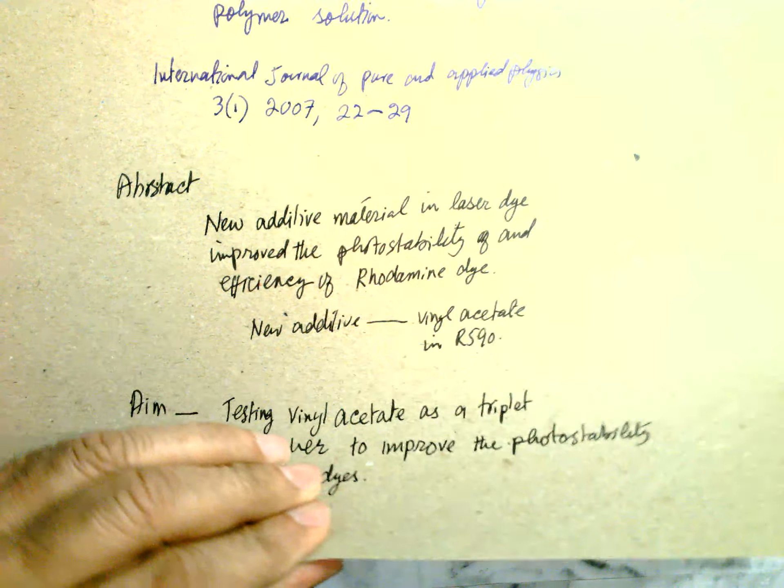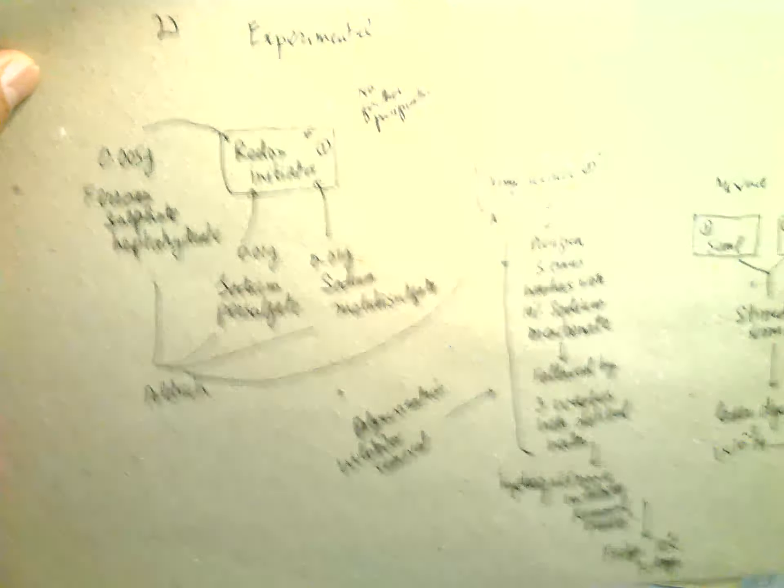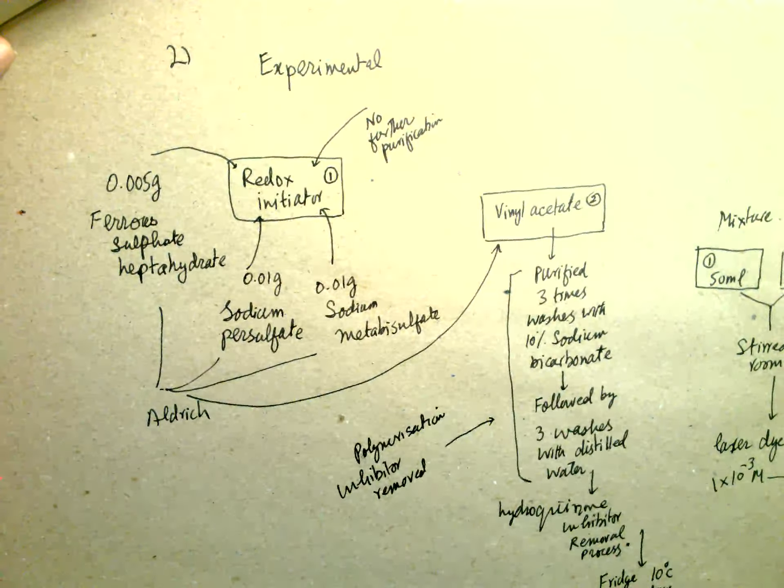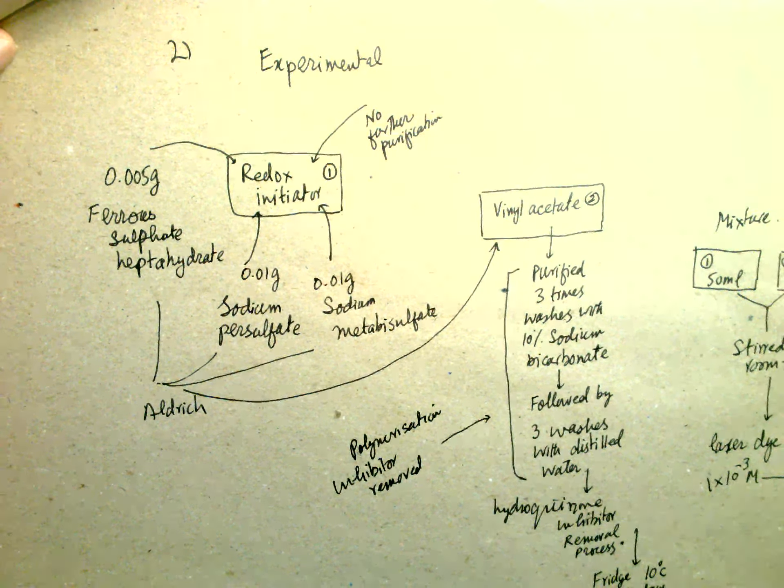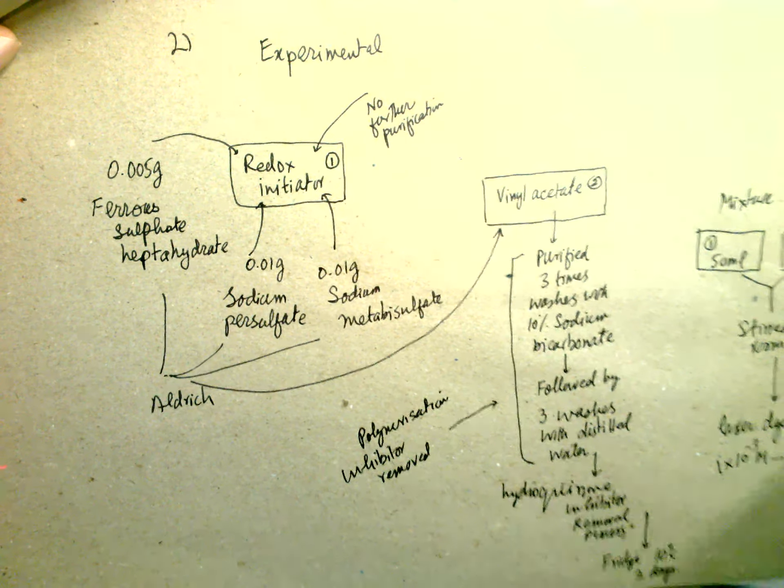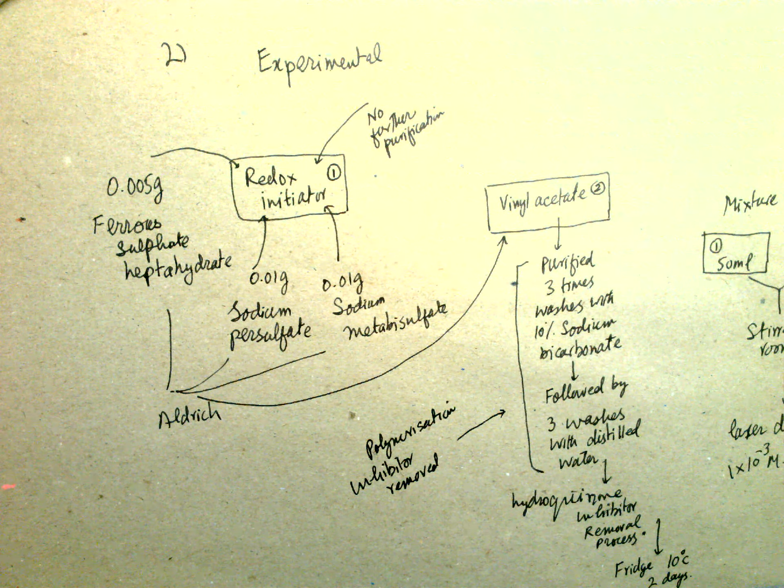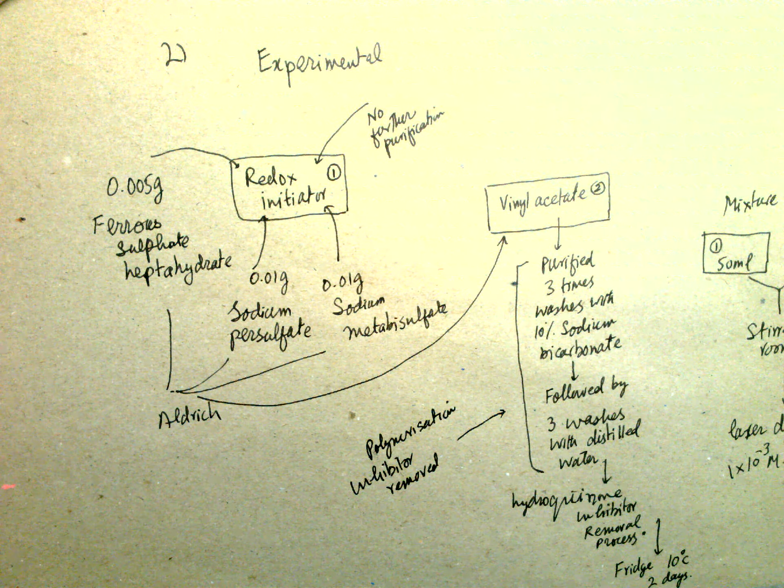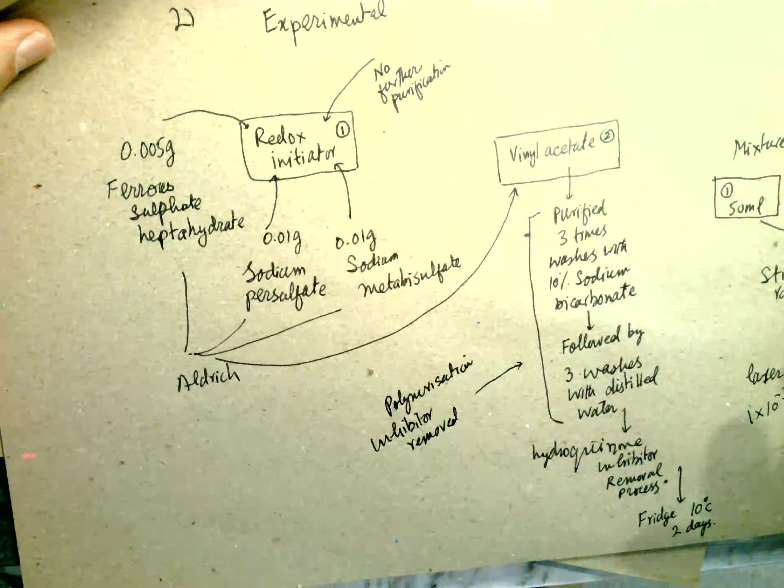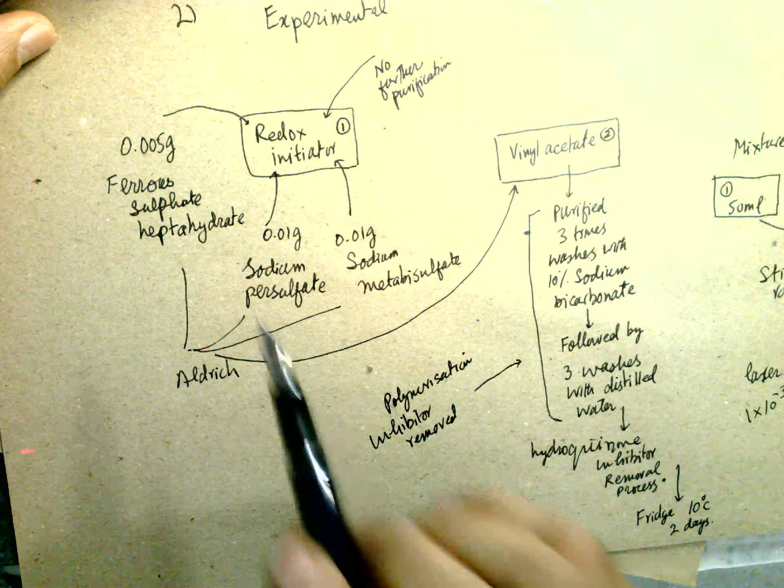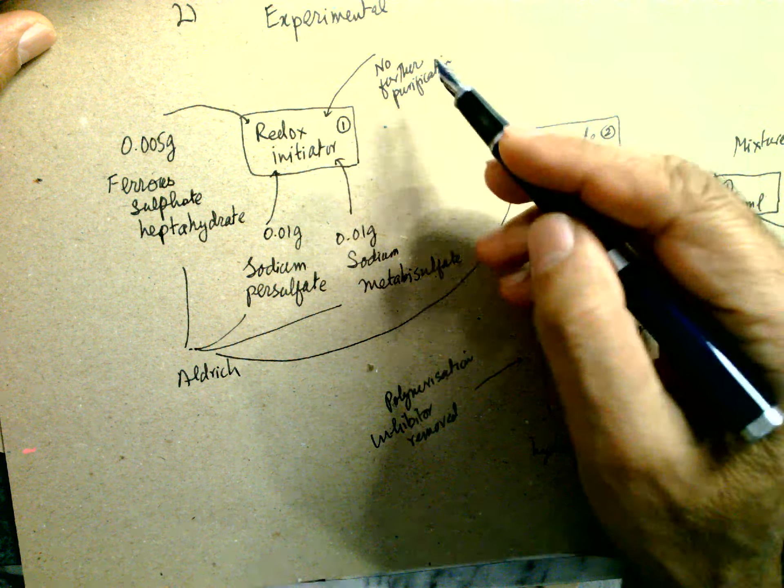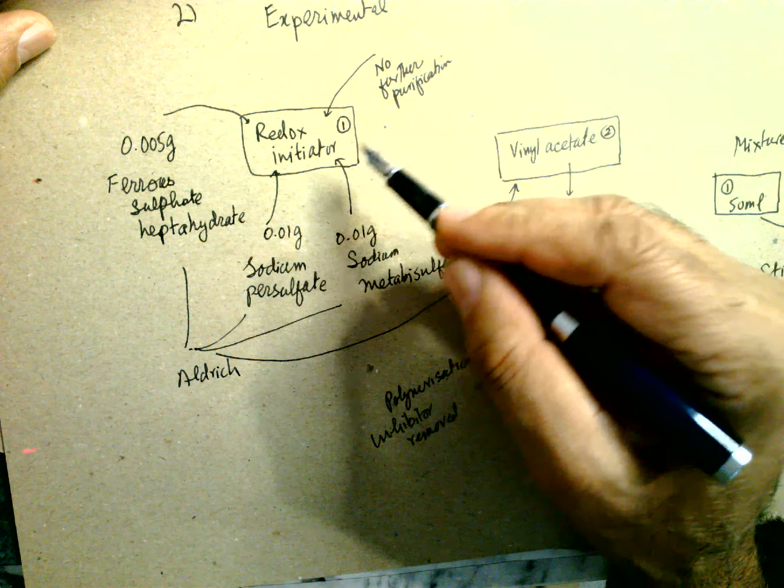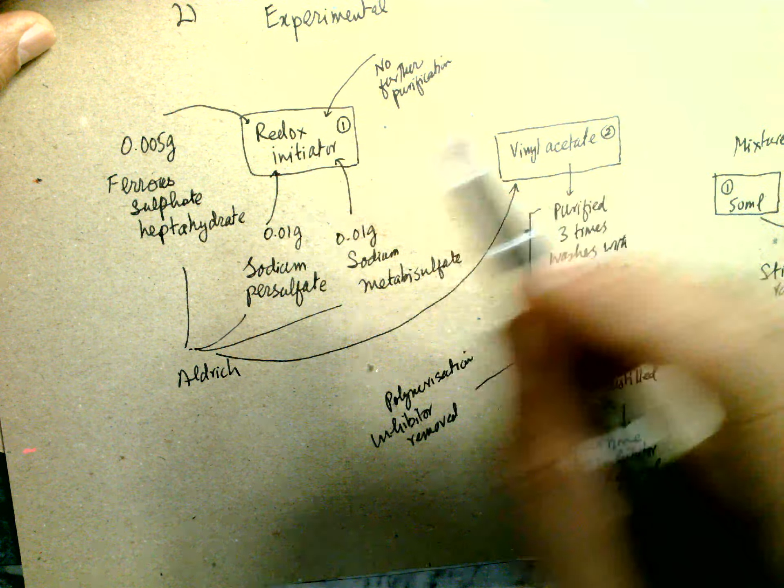Experimental design: The experimental design is similar to previous designs. First of all, the fabrication uses a redox initiator, which is from Aldrich with no further purification. It is 0.005 gram ferrous sulfate heptahydrate.